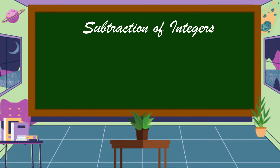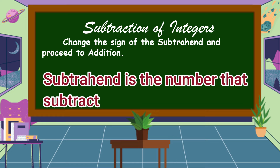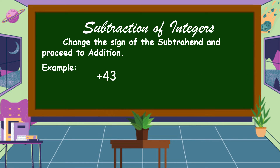Now we are going to discuss subtraction of integers. In subtracting integers, change the sign of the subtrahend and proceed to addition. The subtrahend is the number that is subtracted from the minuend. For example: positive 43 minus positive 20 — we change the sign of the subtrahend from positive 20 to negative 20, and proceed to addition. Our addends are now positive 43 and negative 20. They have different signs, so we subtract: 43 minus 20 equals 23, and copy the sign of the bigger number, which is positive. Therefore, the answer is positive 23.